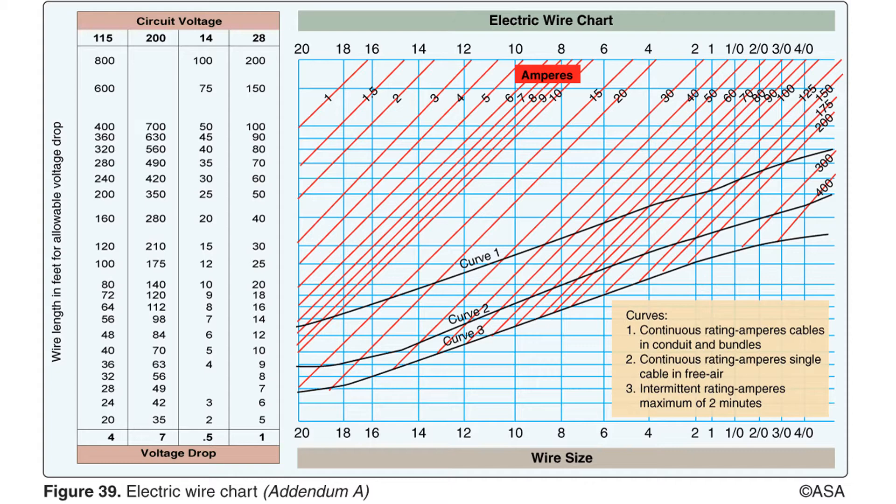Remember the three things that affect resistance in a conducting wire. The smaller the gauge of wire, the greater the resistance. The larger the gauge number, the smaller the gauge of wire. For example, a 20 gauge wire is smaller than a 12 gauge wire and offers more resistance to current flow. The longer the wire, the greater the resistance. The higher the temperature of the wire, the greater the resistance. The greater the resistance, the more heat the wire will generate.